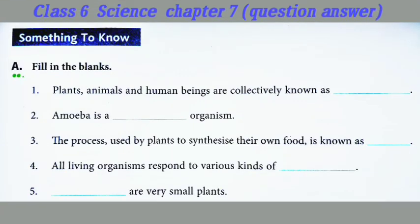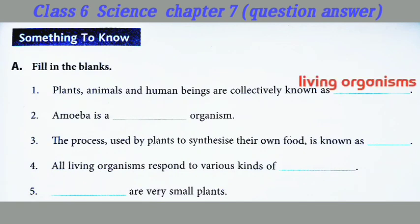Something to know. Section A: Filling in the blanks. Question number 1: Plants, animals and human beings are collectively known as — the answer will be living organisms. Question number 2: Amoeba is a — organism. The answer will be unicellular organism.